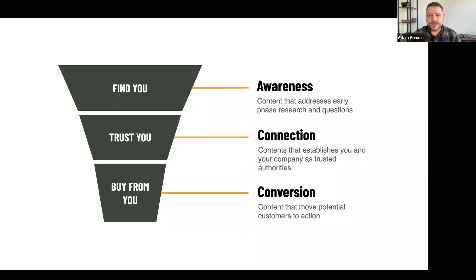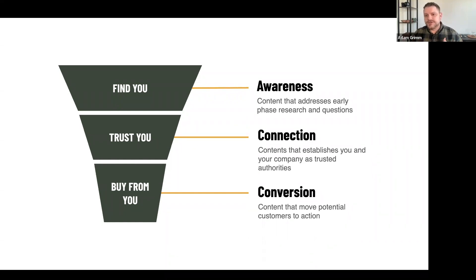The next step is picking what types of questions or topics we should be covering on our website. Thinking about the general marketing funnel — find you, trust you, buy from you — from an SEO context, if someone doesn't know about you they first need to find you on search engine results pages. We create content that helps them find you. Then we need them to trust that you can deliver services at the expected level. Ultimately we want them to set up a consultation or purchase a product.